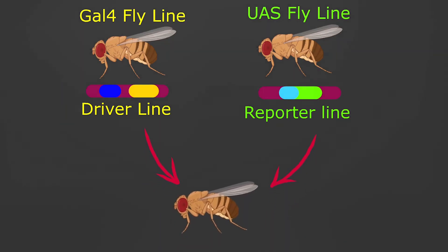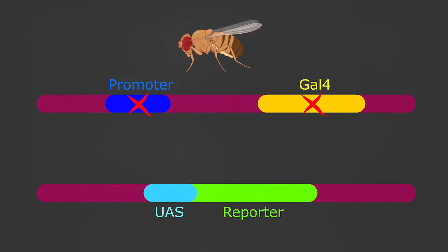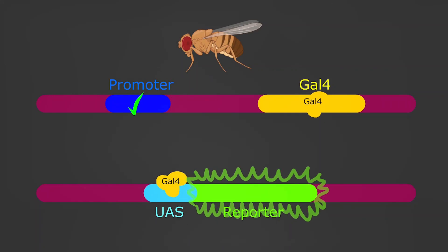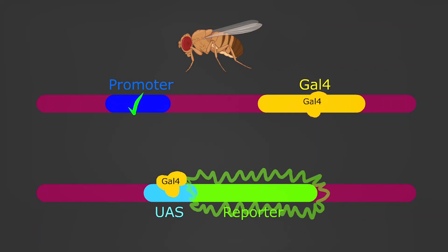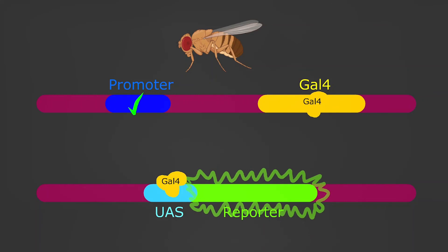The researchers cross the two lines, and they get a fly that has both GAL4 and UAS. In most cells in the fly's body where the promoter is inactive, nothing's going to happen. But in the cells where the promoter is active, allowing the GAL4 gene to produce the GAL4 protein, and the UAS gene is present, GAL4 is going to bond to UAS, which is going to trigger the expression of whatever gene is attached to the UAS. So that's going to tell the researchers exactly where their target gene is being expressed within the fly.